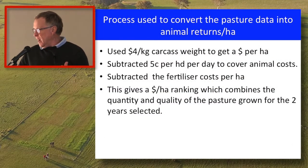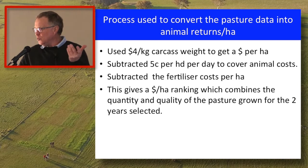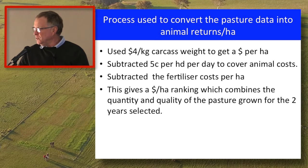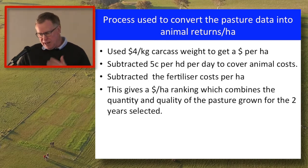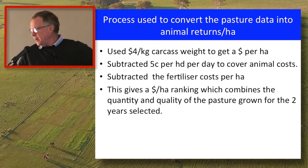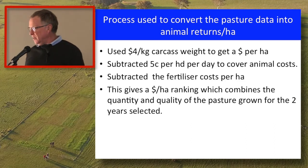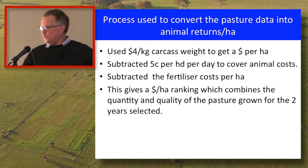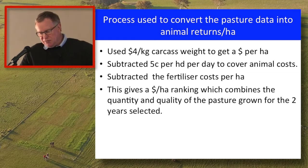I chose $4 a kilo carcass weight to turn that live weight into a dollar figure. $4 at present is sitting somewhere between mutton — in fact it's not far off mutton — with lambs at $6 a kilo carcass. To keep some reality in it, I subtracted 5 cents per head per day to cover animal costs, so plots running more animals have a greater cost. I then subtracted the fertiliser costs per hectare that Fiona put up before, and this gives a dollar ranking.